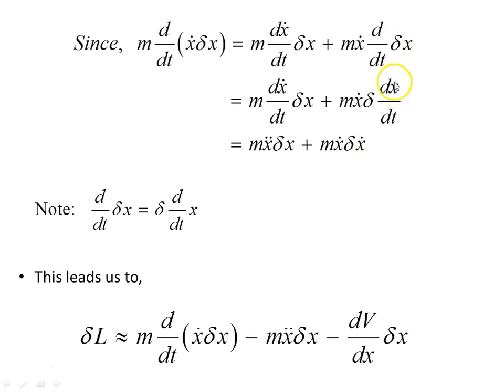Notice in going from this line to this line that the δ variation and the derivative are interchangeable. So this holds, something to note when dealing with variation. This leads us to the variation of the Lagrangian as being this object here, those three terms.